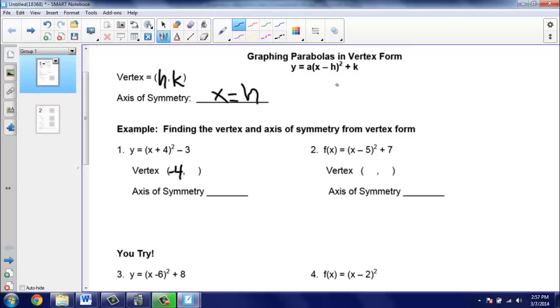But this outside number here doesn't have a subtraction sign in the form, so we don't have to switch the sign. So this will be a negative 3. So our vertex is negative 4, negative 3. And then our axis of symmetry is going to be the equation x equals negative 4. And that's it.